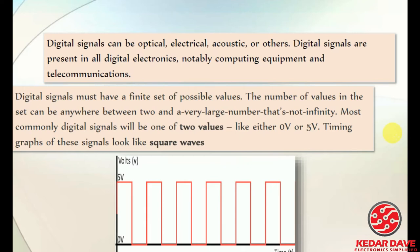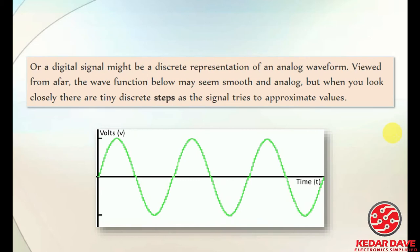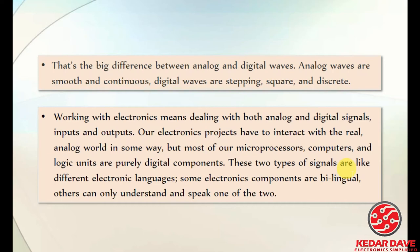With an analog signal, approximate values can be achieved at any point in time. The big difference between analog and digital waves is that analog waves are smooth and continuous, while digital waves are stepping, square, and discrete. These are the main differences between the two.